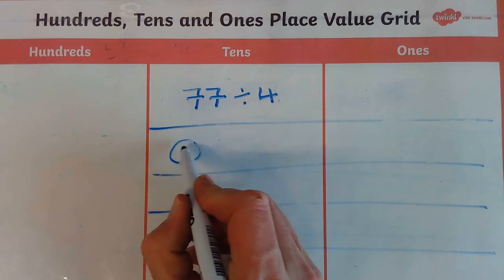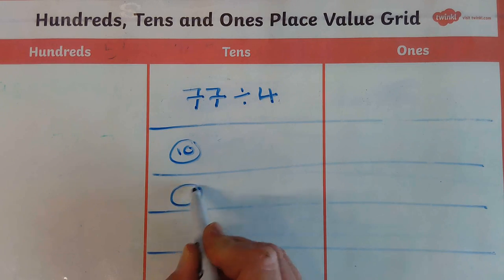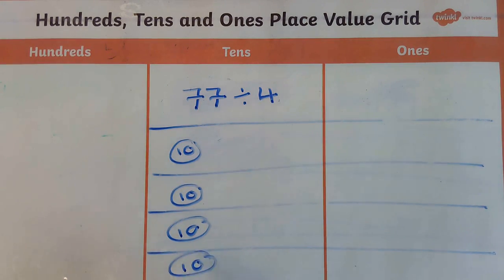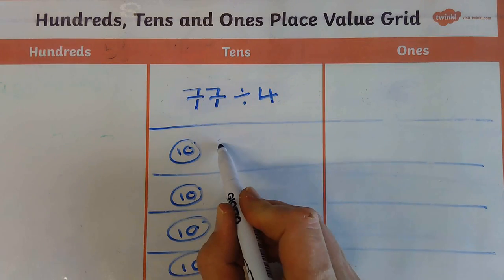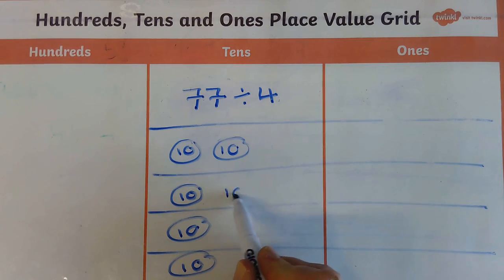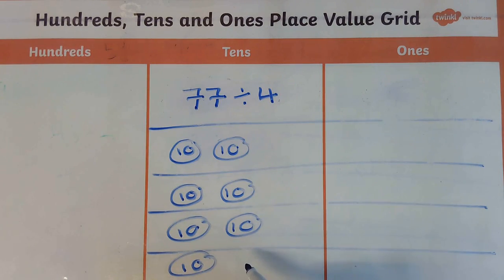So I'm going to have a 10 in this one, 10 in this one, 10 in this one and a 10 in this one. So I've used 40 so far, 10 in this one, 50, 60, 70. Now here we've got a problem because we haven't got enough. So in this case I'm going to have to exchange quite a few of these but we're going to do them one by one.